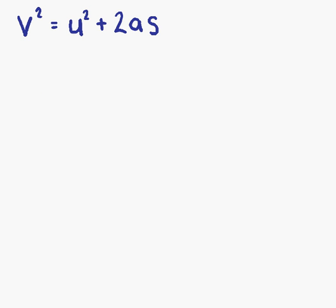On to example number one, which will be our only example in this lesson. We have the formula V squared equals U squared plus 2AS. This is a formula used in physics for calculating the final speed of an object.